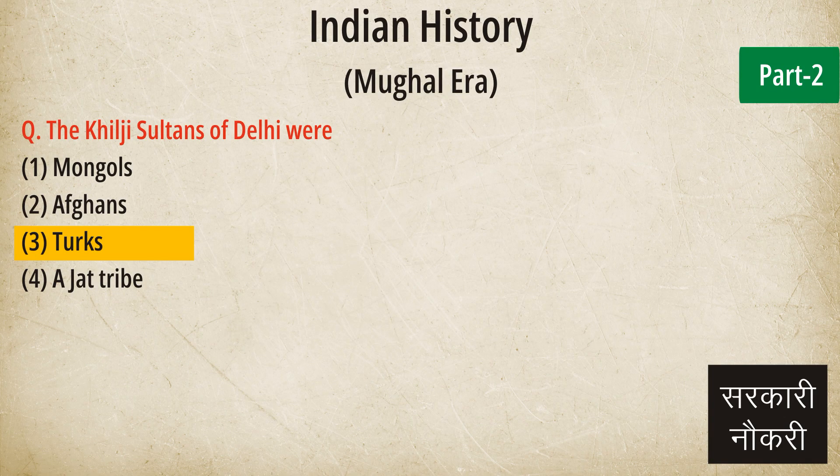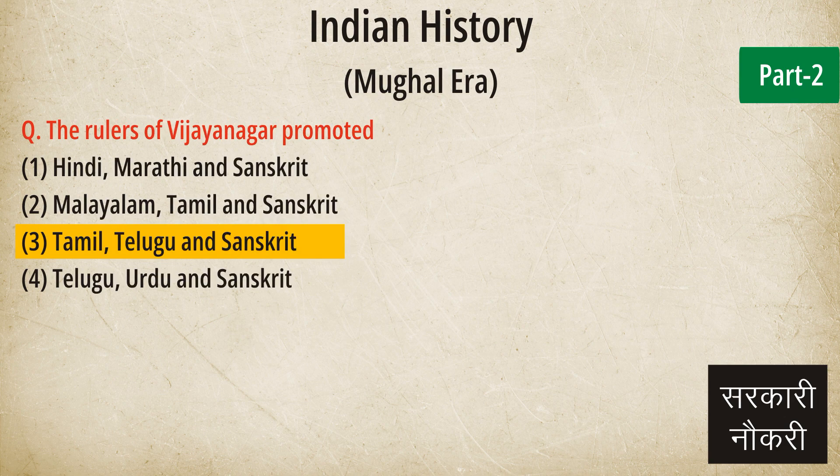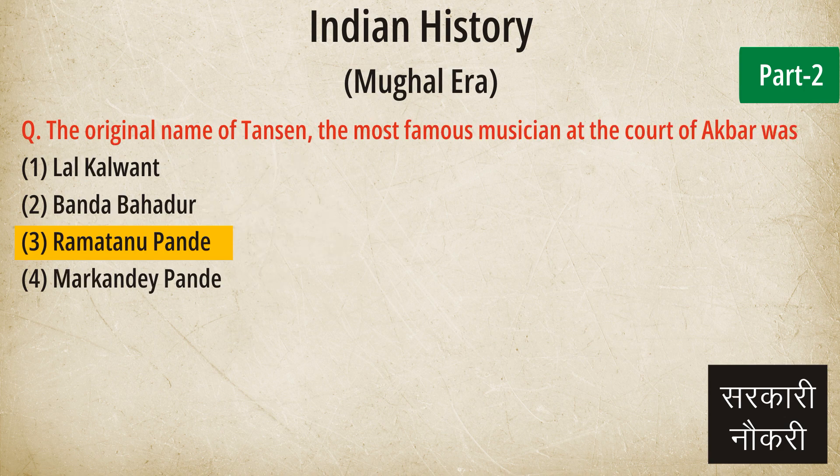Question: The Khilji Sultans of Delhi were. Answer: Turks. Question: Which language is promoted by the rulers of Vijayanagar? Answer: Tamil, Telugu and Sanskrit.